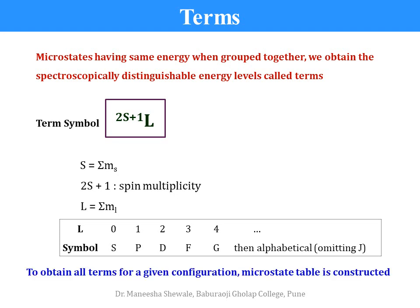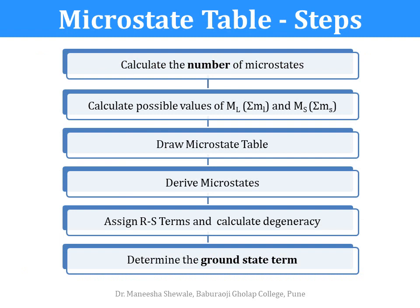To obtain all the terms for a given configuration, we construct the microstate table. The following steps have to be followed: first, we calculate the number of microstates; next, all the possible values of ML and MS are calculated; then the microstate table is drawn where the ML and MS values are written in decreasing order; then one by one the microstates are derived; next, we assign the RS terms and calculate the degeneracy for each term; and finally the ground state term is determined.